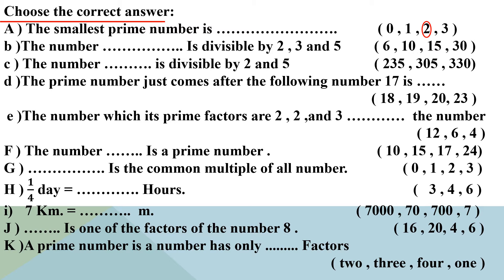Letter B: the number that is divisible by 2, 3, and 5 — is it 6, 10, 15, or 30? Yes, 6 is divisible by 2 because 6 is even. But is 6 divisible by 5? No, so 6 is not divisible by 2, 3 and 5. Take 10 — is 10 divisible by 2? Yes, 10 is an even number.